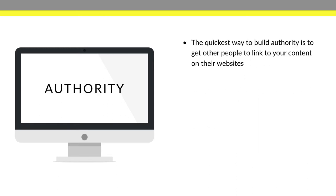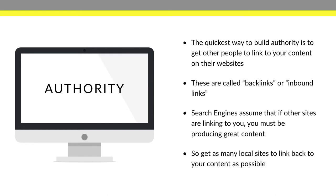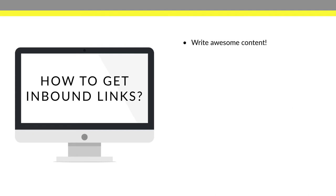The quickest way to build authority is to get other people to link back to your content on their websites — these are called backlinks or inbound links. Search engines assume that if other people are linking to you, you must be producing great content. Get as many local sites to link back to you as possible — other business owners, community influencers, local newspapers, anyone willing to link back to you.